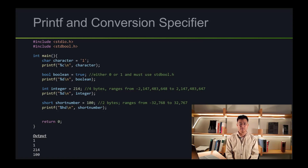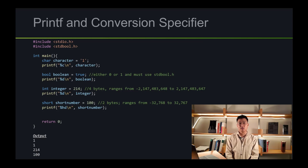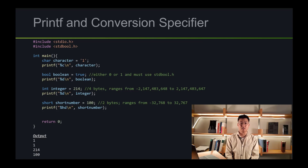The next type is integer. Integer contains 4 bytes and the number ranges from minus 2 trillion all the way up to 2 trillion. In order to print out an integer, the conversion specifier is %d. If we look at the output, it printed out 214, and that makes sense. Next is the short type. Short is kind of like integer except it takes less memory — it is 2 bytes, and the number range is from minus 32,000 all the way to positive 32,000. To print a short data type, the specifier is %hd.